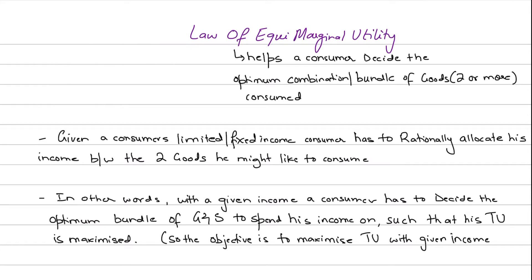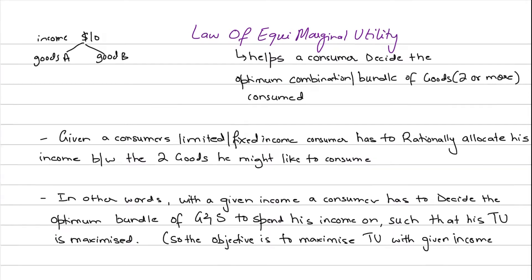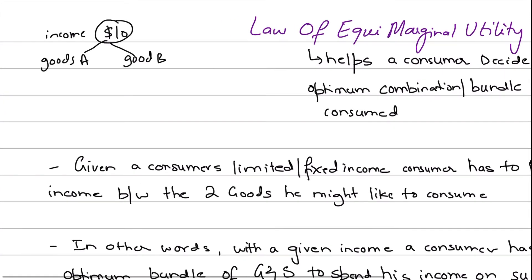Now, what if there are two commodities — two goods? Let's say the consumer has a limited income of $10 and he needs to allocate his given income between two goods, good A and good B — which could be anything like ice cream and chocolates. With a given income, we need to allocate resources in such a way that we can optimize the consumption.